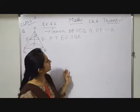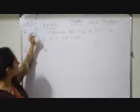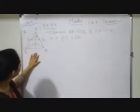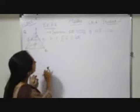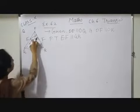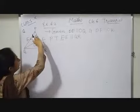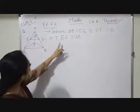In this video, we will discuss some problems of Exercise 6.2. Here in this question, this figure is given to you. They have also given DE parallel OQ, DF parallel OR, and we have to prove that EF parallel QR.